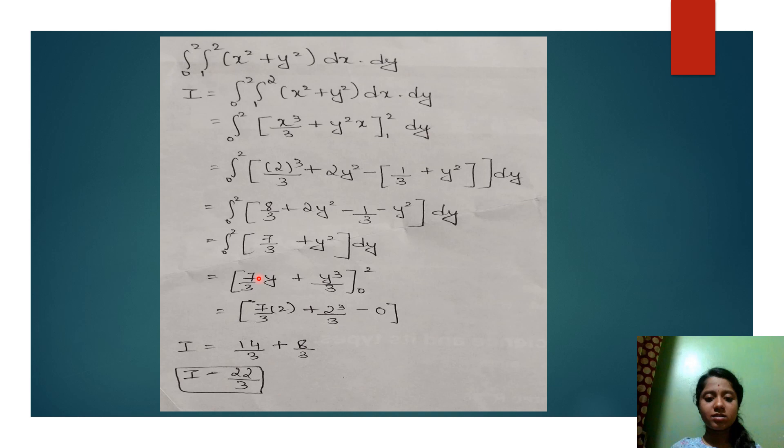So anything into 0 is 0. 7 by 3 y will be 0, and if you substitute 0 in the place of y cube also, it will be 0. So it is directly written as minus 0.